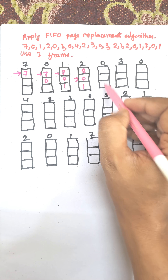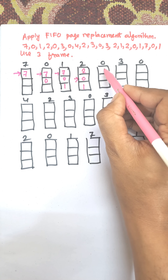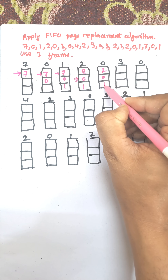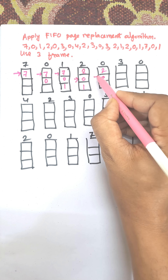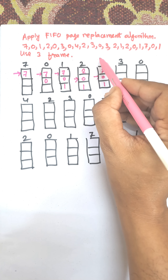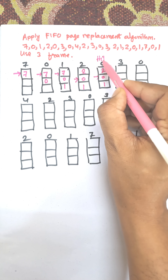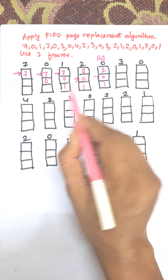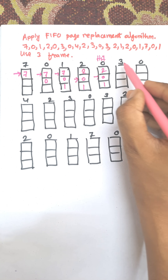Now 0 is already present in memory, so there is no need to replace it — this is a hit. When a page is available in memory it is known as a hit; otherwise it is known as a miss, or page fault.